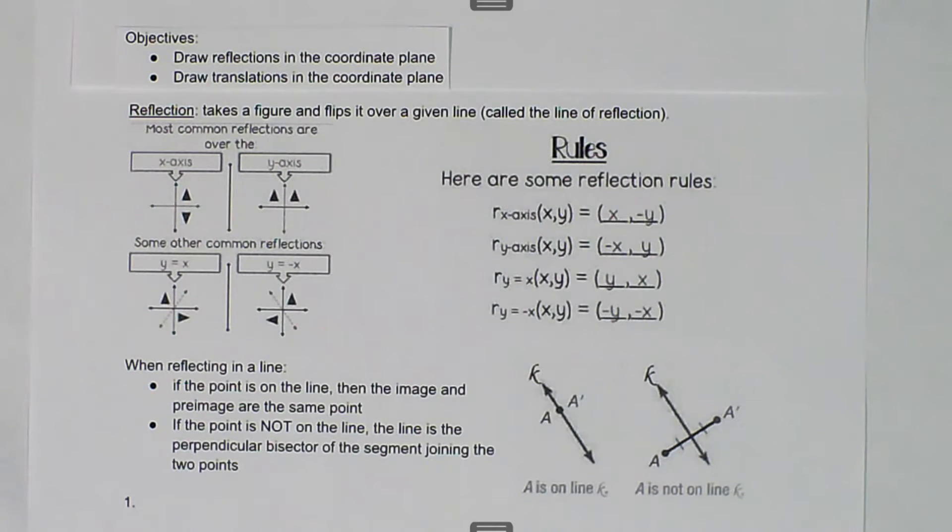Right now we have four basic lines that we are going to be able to reflect over, and there's a coordinate rule for how the coordinates change from the pre-image to the image.